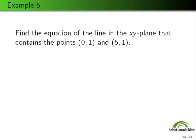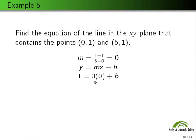The final example: find the equation of the line in the xy plane that contains the points (0, 1) and (5, 1). Both points have y equal to 1, so we should visualize a horizontal line. The slope is (1 minus 1) over (5 minus 0), which equals 0. A horizontal line has a slope of 0. Using y equals mx plus b with m equals 0 and the point (0, 1): 1 equals 0 times 0 plus b, so b equals 1. Therefore the equation of this line is simply y equals 1.